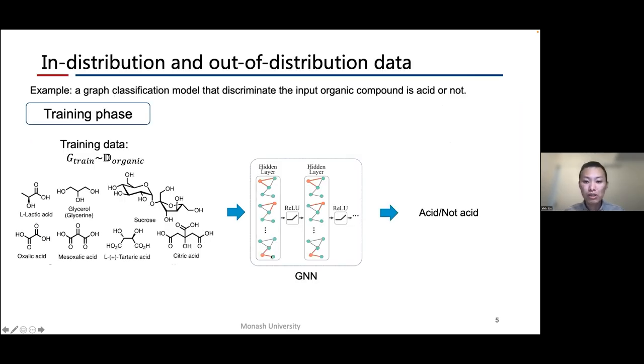However, most current GNNs often assume that the training and testing data follow the same distribution, which is not a practical assumption in real world scenarios. Here we use an example to illustrate this. Let's consider a graph classification model that discriminates whether the input organic compound is acid or not. In the training phase, the training data are sampled from the distribution of organic compounds, and the GNN learns to discriminate correctly with the guidance of these training samples.